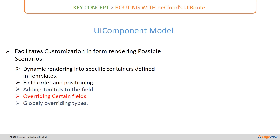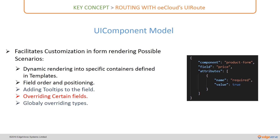The next scenario is overriding certain fields. Suppose there is a product model with a field called 'price', and the price field has no validations in the model definition. You can bring in additional validations at a UI level — for example, you could build an attributes array to specify that a 'required' attribute should be attached to the field called 'price'.